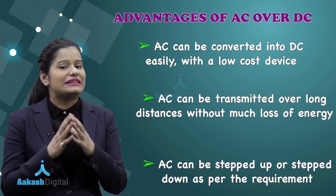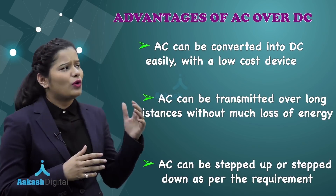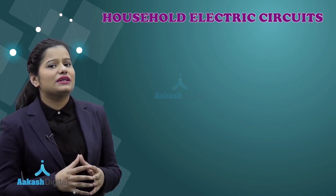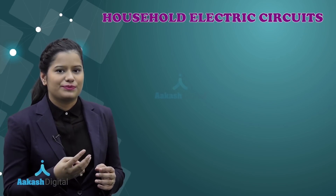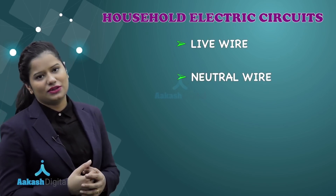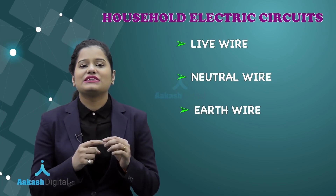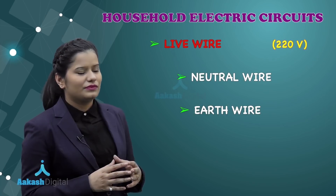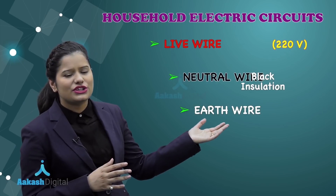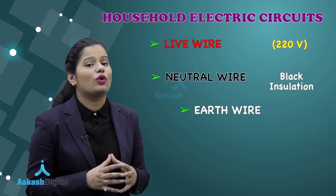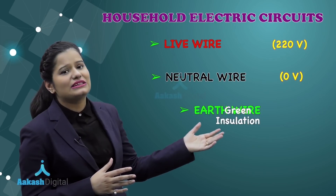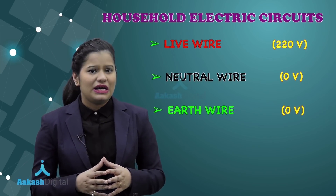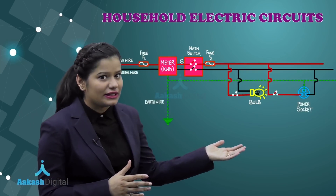AC can be stepped up or stepped down as per the requirement, but DC cannot. The power supply in our houses comes through three wires: the live wire, the neutral wire, and the earth wire. The live wire has red insulation and is always at a potential of 220 volt. The neutral wire has black insulation and is at a potential of 0 volt, while the earth wire has green insulation and is also at a potential of 0 volt.